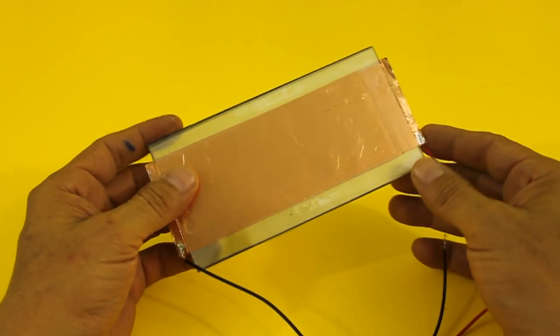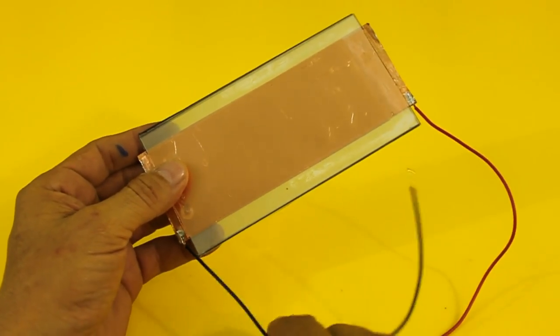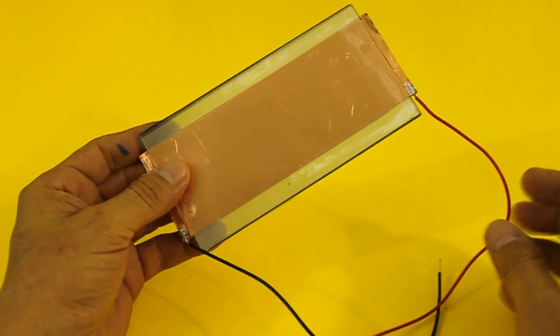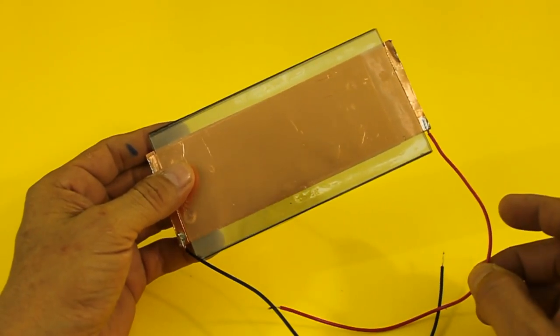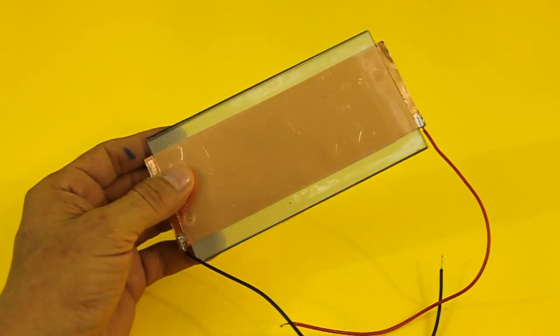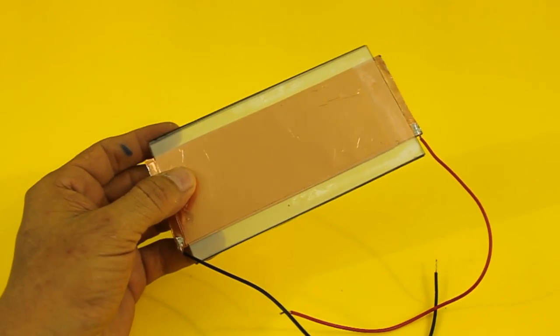Well, the capacitor is now ready. I have added 2 wires. I used black and red, however, this type of capacitor has no polarity. Let's now test it with some high voltage.